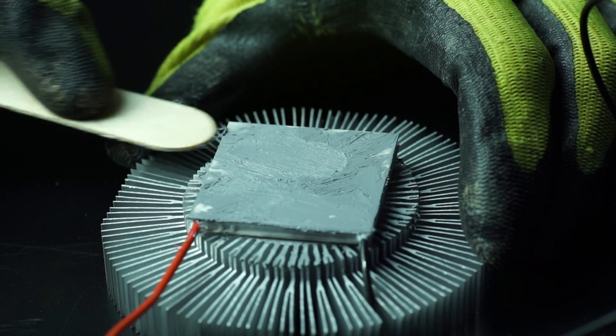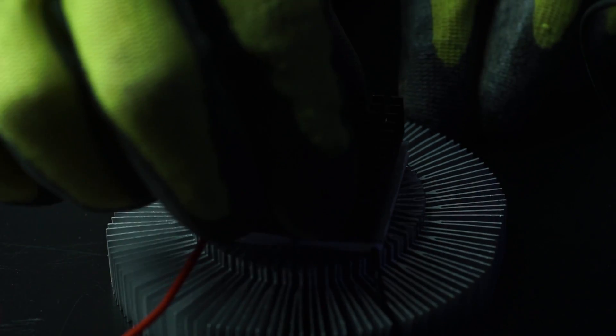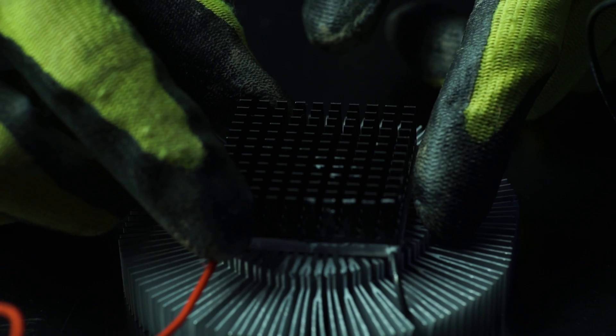Repeat the process with the thermal compound and prepare to attach a smaller heat sink on the hot side of the Peltier cell.